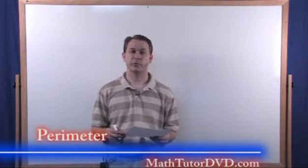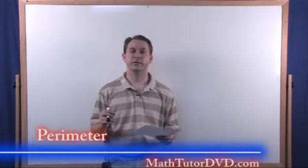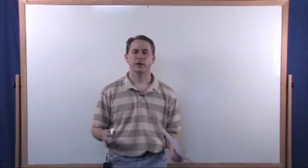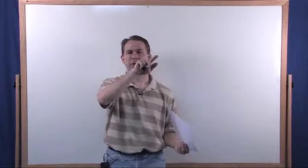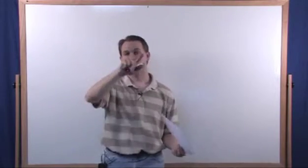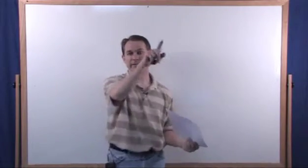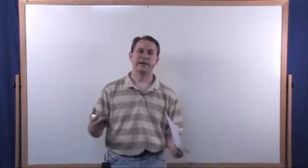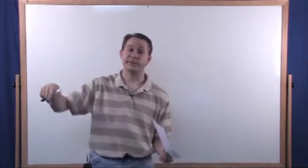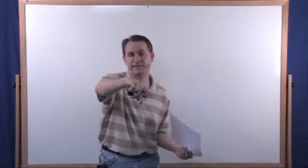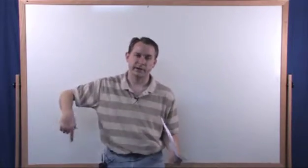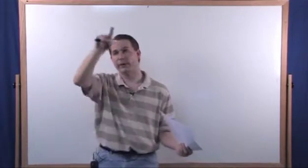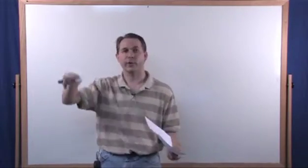Welcome to this section of the Geometry Tutor where we're going to learn about the concept of perimeter. Perimeter is a big word. All it means is if you have a shape and you have the lengths of the sides of that shape and you add them up, that's called a perimeter. So in your backyard you've got a fence that goes all the way around your backyard. If you know that this side is 10 feet and that side is 15 feet and this side is 10 feet, you add them all up and you get the perimeter all the way around the shape. Perimeter means all the way around the shape.